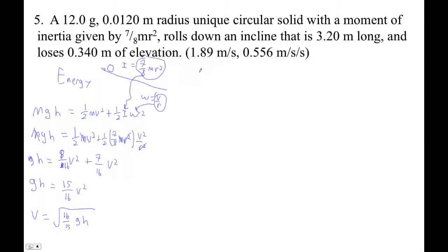So step one, it'll ask you what is the final velocity. So find V. That's going to be V is the square root of 16 fifteenths times 9.81. And then the height is 0.34.